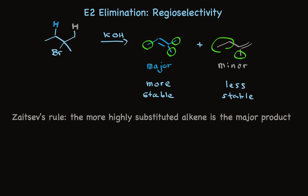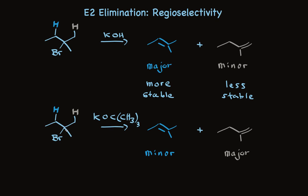Take a look at these results. When this very same alkyl bromide is treated with a bulky base, that more stable product is the minor product. The major product is the one that is less highly substituted. This has a very easy explanation.